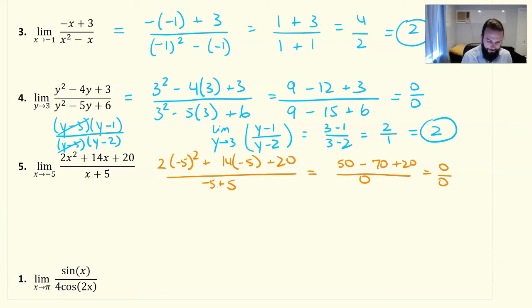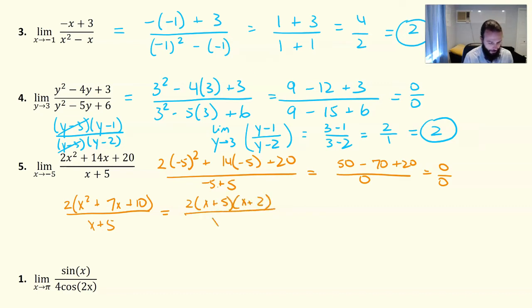We're going to factor the numerator. We're going to take a 2 out and be left with x squared plus 7x plus 10 over x plus 5. And then we're going to factor it further, 2 times x plus 5 times x plus 2 over x plus 5. Divide out the x plus 5s. We're left with just 2 times x plus 2.